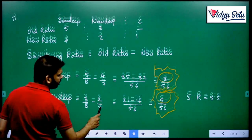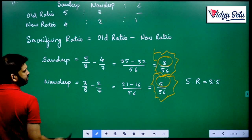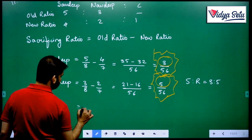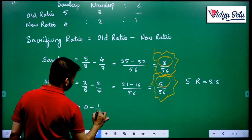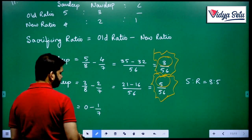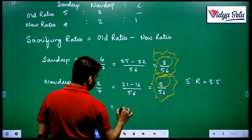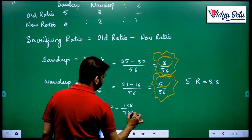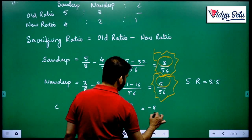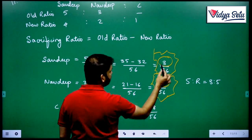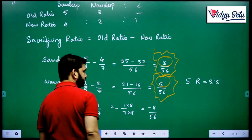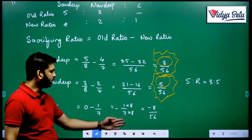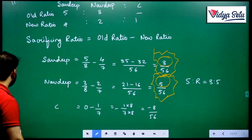Let us verify: C equals 0 plus 1 by 7, gaining 1 by 7. Making it equal gives 8 by 56, and 3 plus 5 equals 8 by 56, confirming the answer is correct. So C is gaining and the old partners are sacrificing.